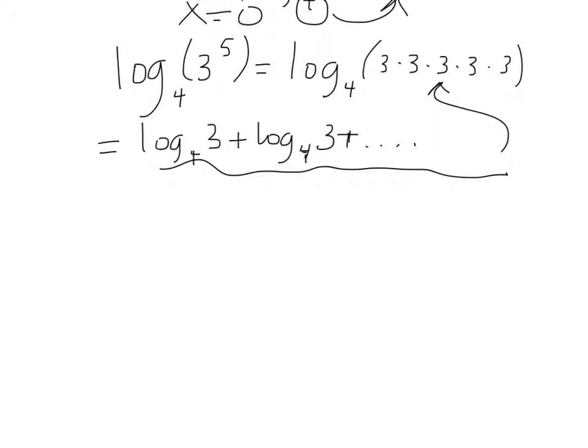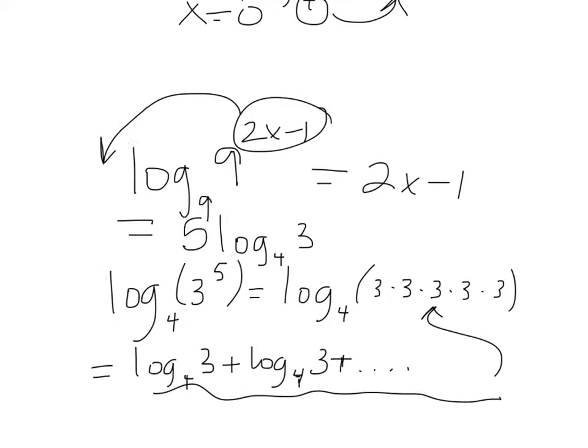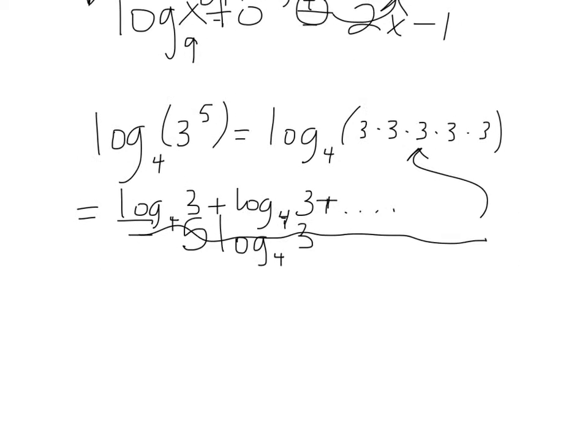So if I have multiplication, I can break it into separate logarithms with addition. We went in the reverse before. Remember, we went from here 5 times and we combined into things like that. So what we really have when we write this out 5 times is 5 of the log base 4 of 3s. Which means that when we started with this, all we did is we took that 5 and we moved it to the front.